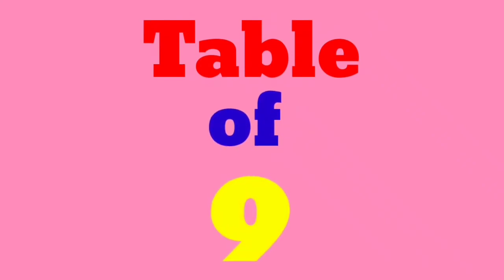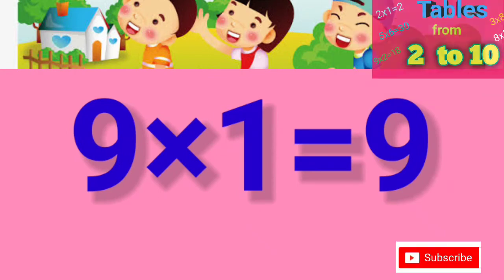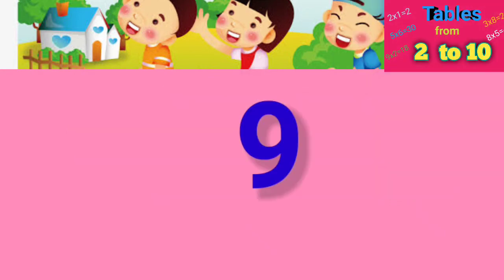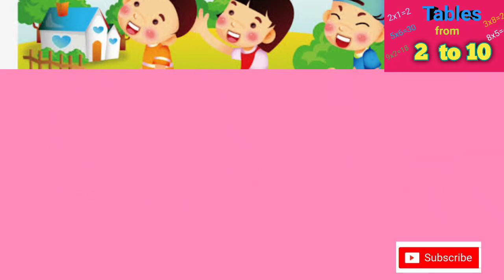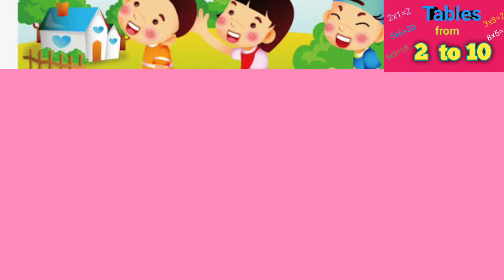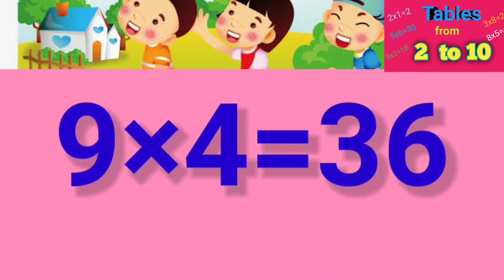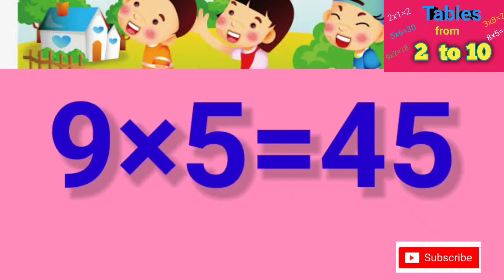Table of 9: 9×1=9, 9×2=18, 9×3=27, 9×4=36, 9×5=45.